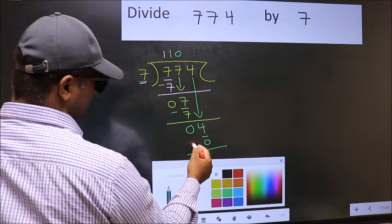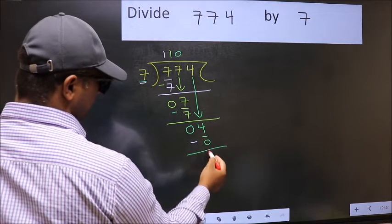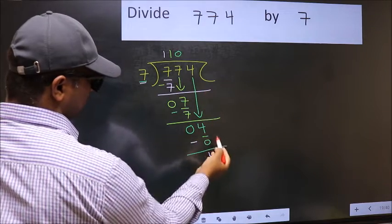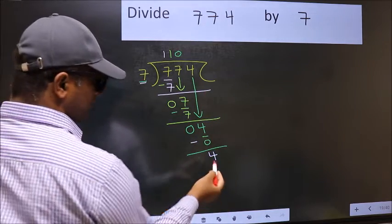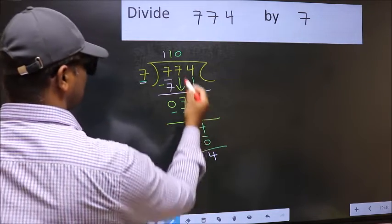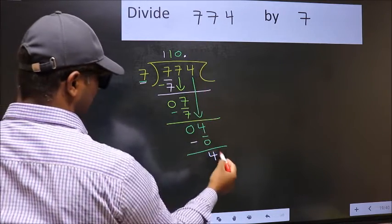Now you should subtract. 4 minus 0, 4. Over here, we did not bring any number down. And 4 is smaller than 7. So now you can put dot and take 0.